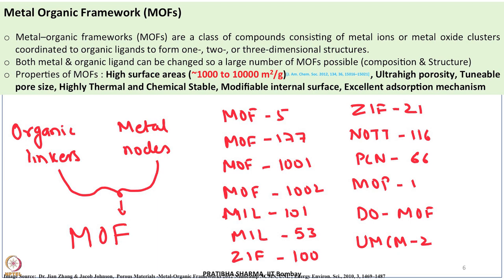MOFs vary in composition and structure. Well-known examples include MOF-5, MOF-177, ZIF-100, ZIF-21, MIL-53, and MIL-101. They can have specific surface areas ranging from 1000 to over 10,000 square meters per gram, with ultra-high porosity, tunable pore sizes, high thermal and chemical stability, and modifiable internal structure. They have very good adsorption capacity; however, the challenge remains to synthesize homogeneous material at a larger scale.